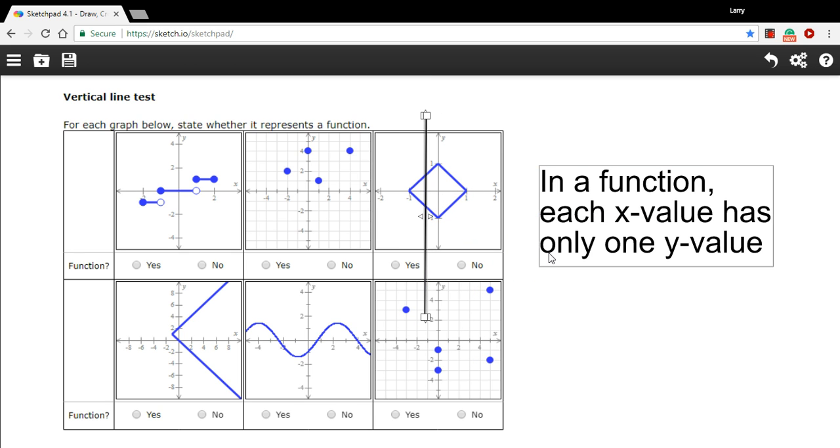So for example, here, this vertical line intersects the function in two points. What that means is for this one x value, there are two different y values. So this is not a function.